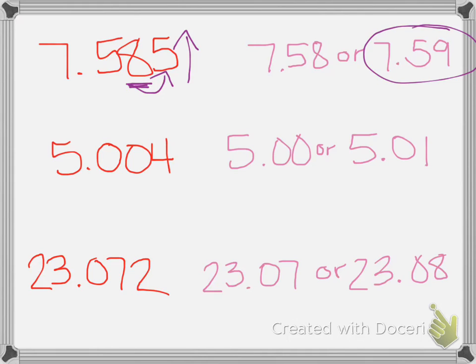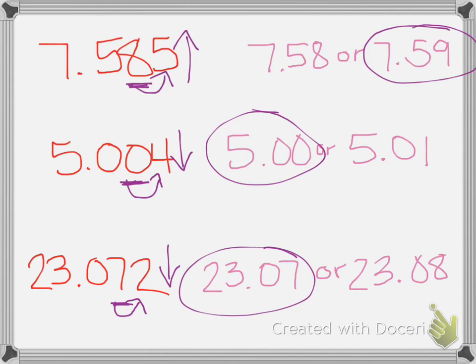For 5 and 4 thousandths, we look at the 0 in our hundredths place. We look to the right, since it's a 4, we round down. So we would round down to 0. 23 and 72 thousandths, the 7 is in our hundredths place, so we look to the right, it's a 2. We round down. The first one would be correct.